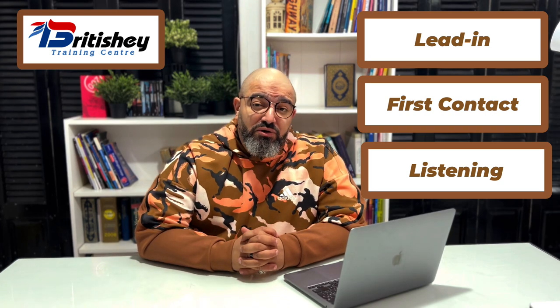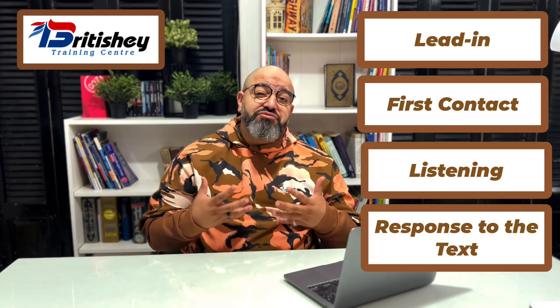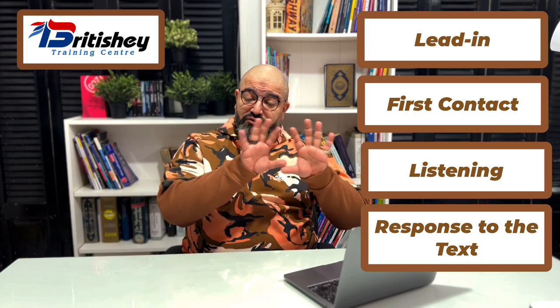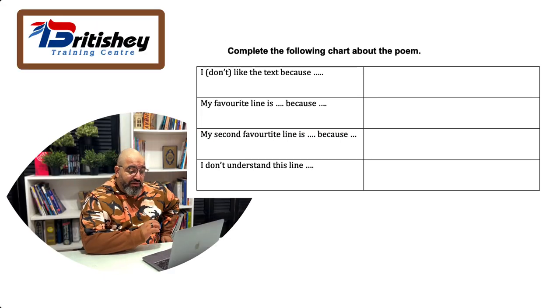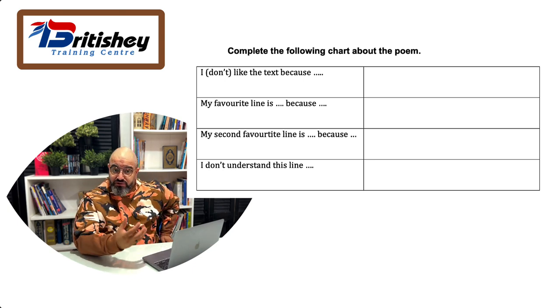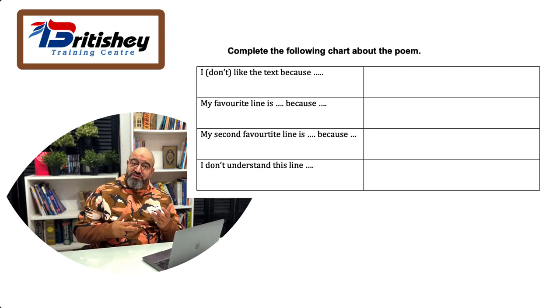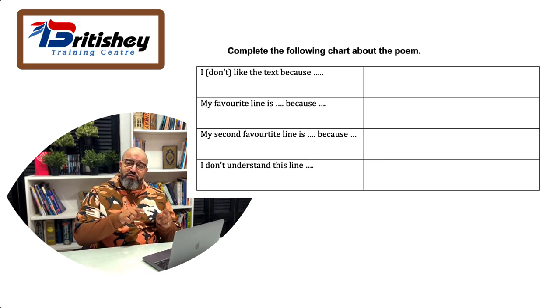The fourth stage is what we call 'response to the text.' In this stage you can have either questions or stem sentences for students to complete — but the questions need to be about students' feelings about the poem, not answers taken directly from the text. For example, stem sentences like: 'I don't like the poem because...', 'My favorite line is... because...', 'My second favorite line is... because...', 'I don't understand this line...' Then students compare with their partners, discuss, give reasons, and you provide feedback.